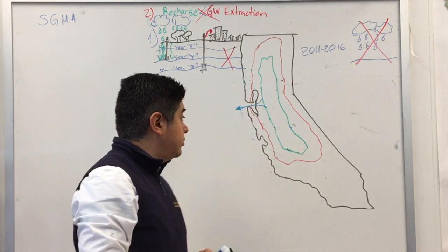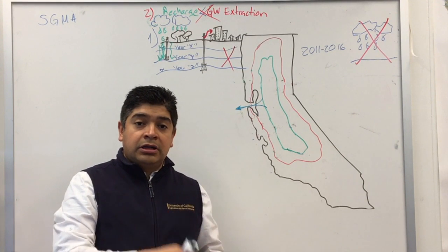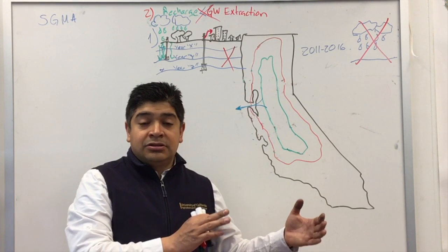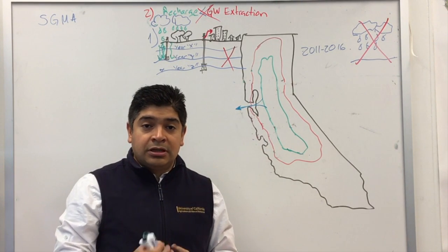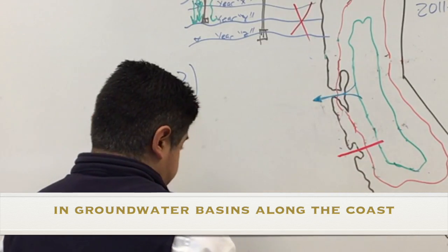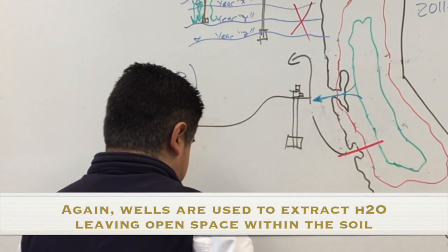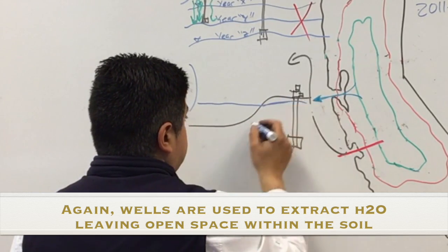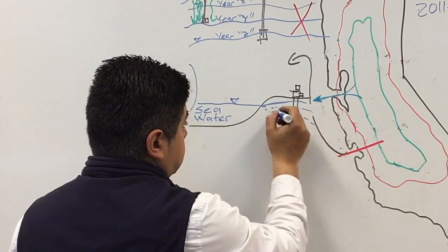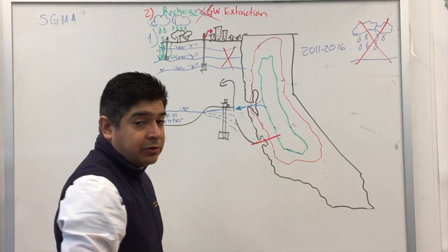Undesirable result number three, seawater intrusion. In some of our groundwater basins throughout the coast, more water is actually taken out of the aquifer than the water that is being recharged. What does that mean? That is provoking or allowing all the water from the sea, seawater, to intrude or move into our aquifers. And this is something that this legislation is preventing. As the water levels are reducing and more water is extracted, water from the sea is moving into our groundwater aquifers.